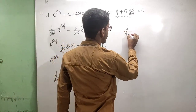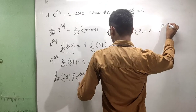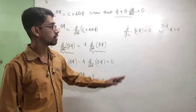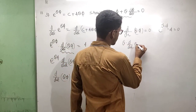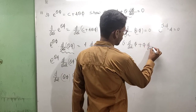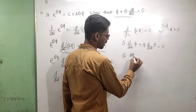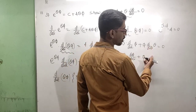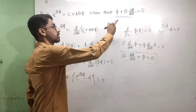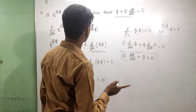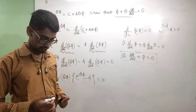Since e^(θ·φ) = c + 4θ·φ is not generally equal to 4, (e^(θ·φ) − 4) ≠ 0, so φ + θ · dφ/dθ = 0. Hence proved.